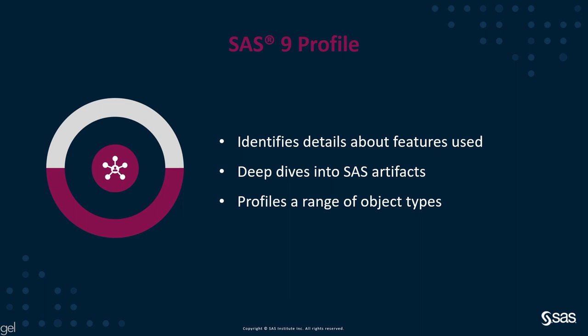The profile application provides information about the features that have been used in your SAS 9.4 system. It drills down into the detail of your SAS artifacts, reporting on detailed characteristics such as the structures of jobs and hierarchies in OLAP cubes. It also looks at Enterprise Guide and Enterprise Miner projects, and displays information about object dependencies. Profile can also be run on multiple SAS deployments, and like Inventory, it creates a datamart for each SAS deployment that is profiled.